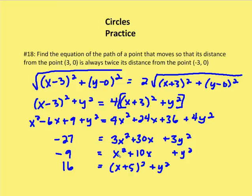Dividing by 3: x squared plus 10x plus y squared equals negative 9. Completing the square, x plus 5 squared introduces 25 new units, so adding 25 to both sides gives 16 equals x plus 5 squared plus y squared. The path is therefore a circle with center at (negative 5, 0) and a radius of 4.